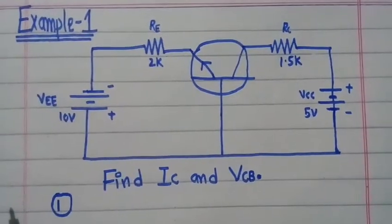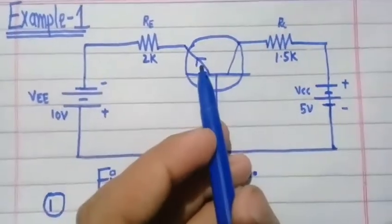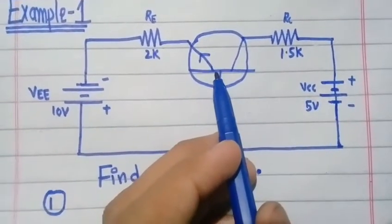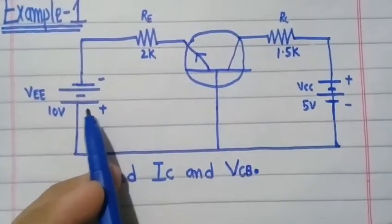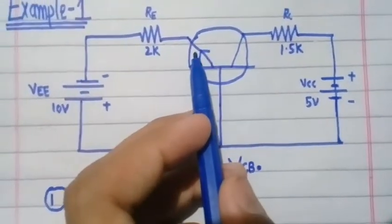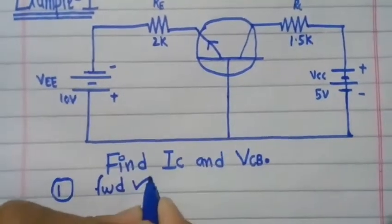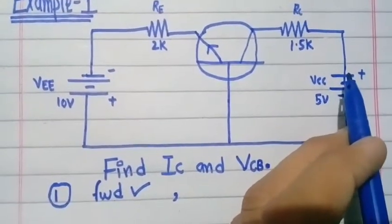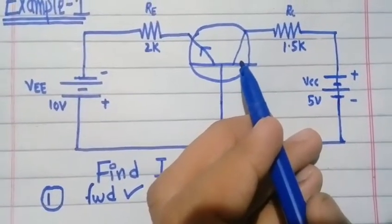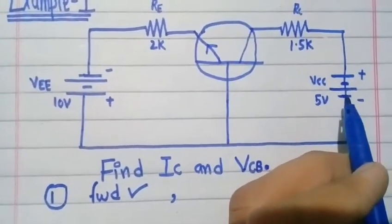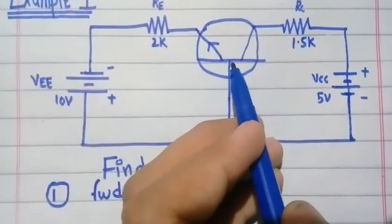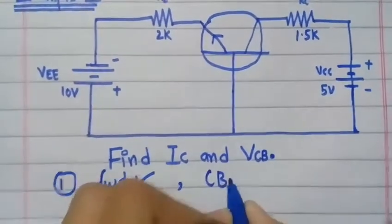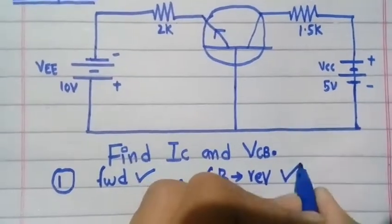The first question is whether the transistor is working or not. A transistor works when its base-emitter junction is forward biased and the collector-base junction is reverse biased. In this circuit, the emitter terminal is connected to the negative terminal of the battery and the base is connected to the positive terminal, so the base-emitter junction is forward biased — first condition is met. For the second condition, the collector-base junction is reverse biased, so the second condition is also met.